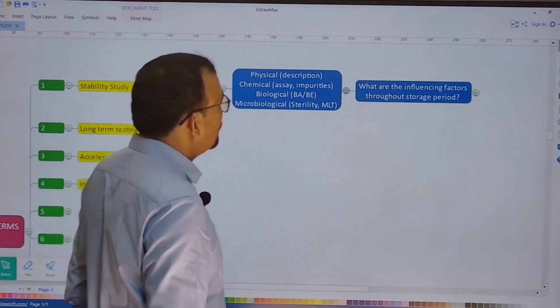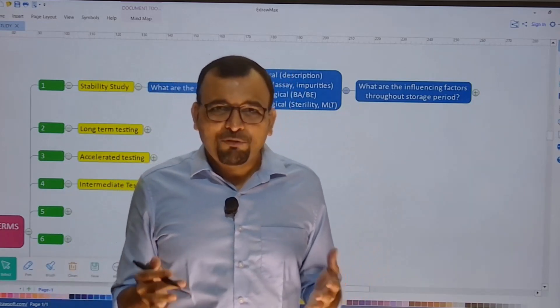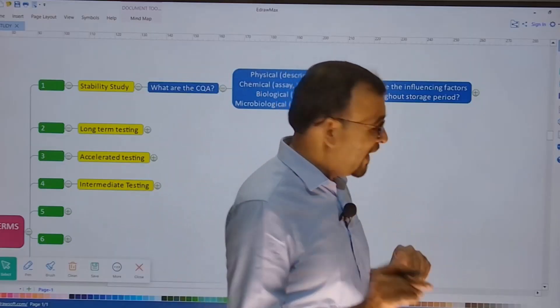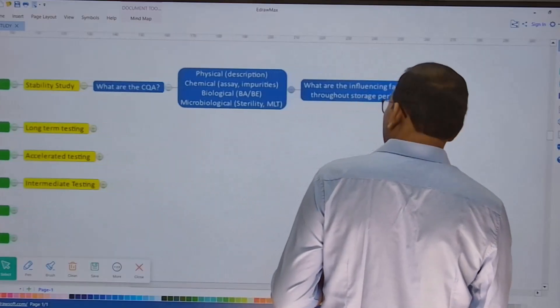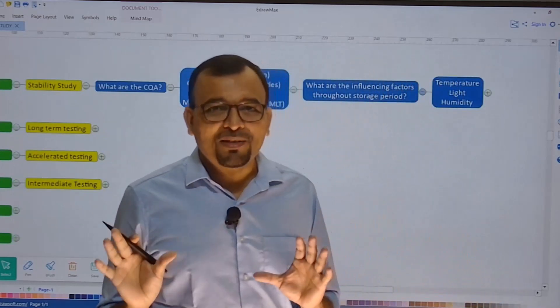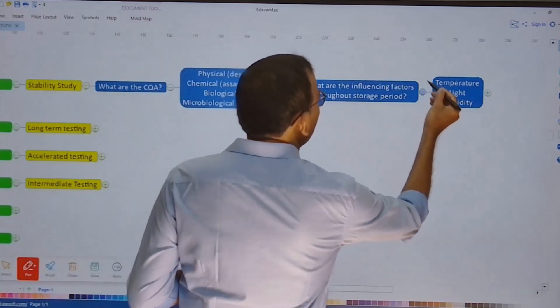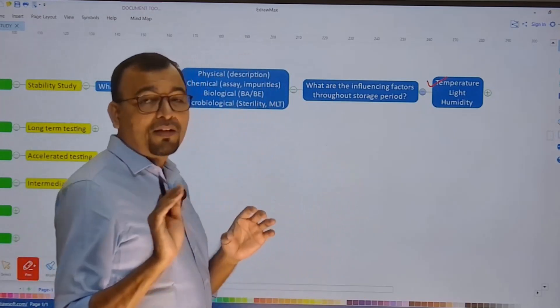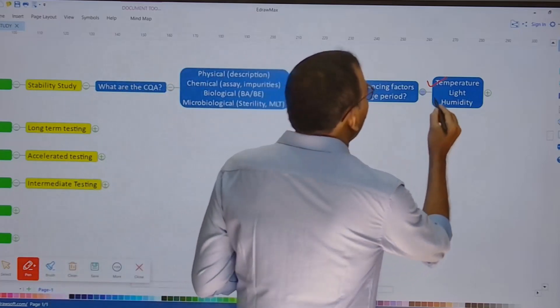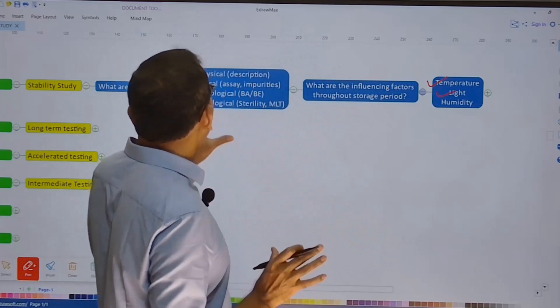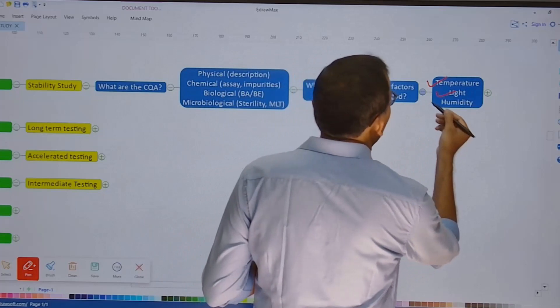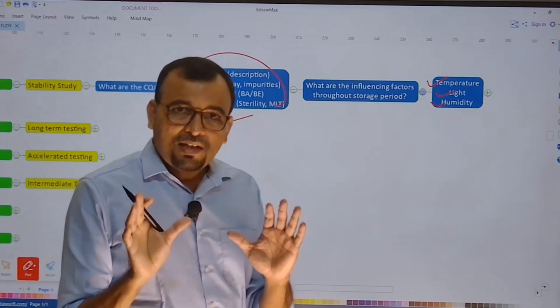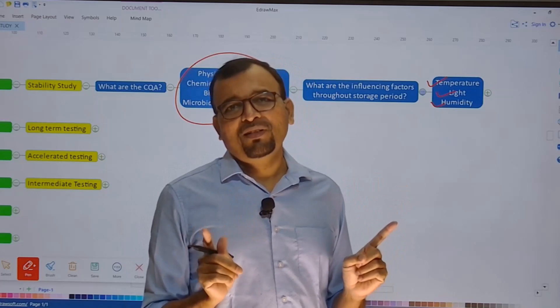So what are the influencing factors through the storage period? Now why do these CQAs get influenced? Why do these CQAs probably get affected? There could be some storage factors which are going to influence our CQAs. Now these are the factors which can certainly influence our CQAs. The first one is temperature. The temperature can be the influencing factor on CQAs like assay or impurities. Even the microbiological integrity can get compromised because of higher temperature. Light can also be an influencing factor as far as the product's physical and sometimes chemical attributes are concerned. And humidity is also one of the very critical influencing factors as far as some of the important CQAs are concerned.